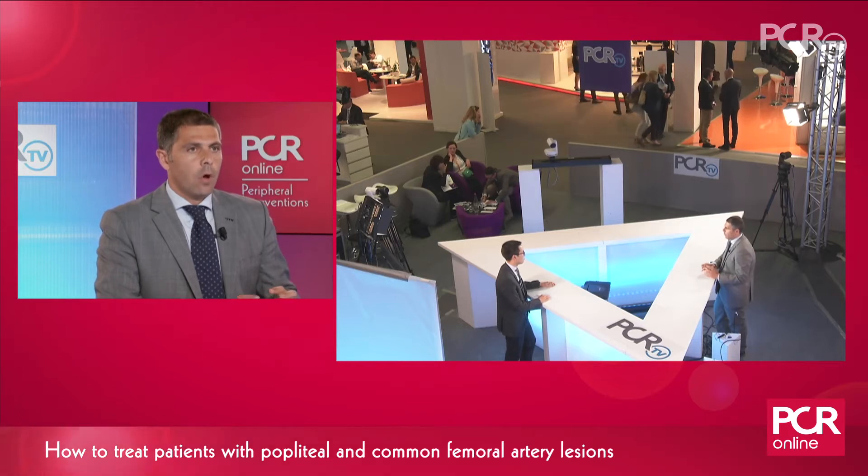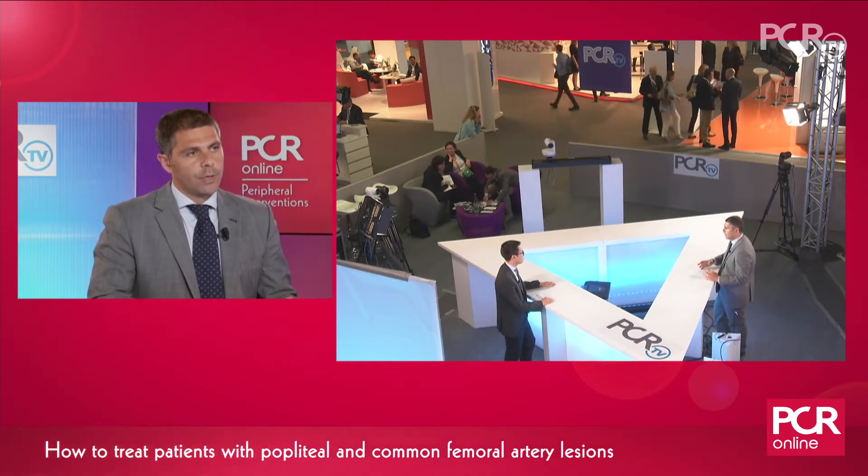I think this is a very important question because the common femoral artery and popliteal artery, anatomically speaking, are the worst part of the vascular tree of the leg. First, they are two bending zones, so we don't like at all to use prostheses — our aim is not to stent these patients, or if we need to use a stent, we need a dedicated stent for that.